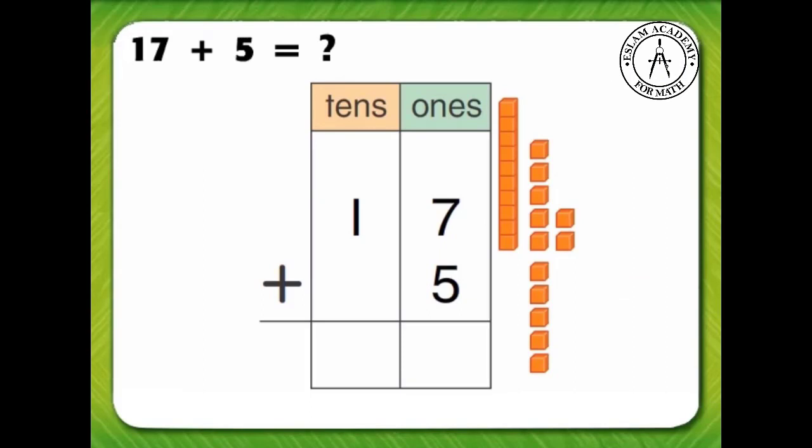In step 2, regroup if needed and write how many. There are 12 ones. We can regroup 12 as tens and ones. Write 1 ten in the tens column.